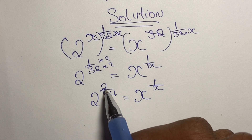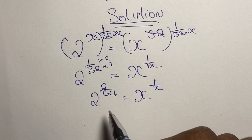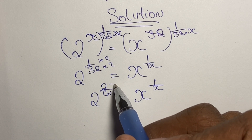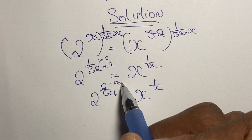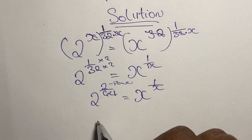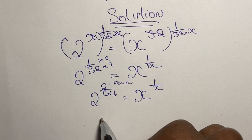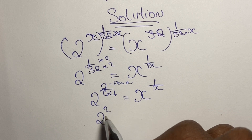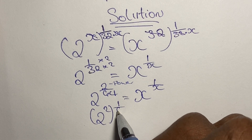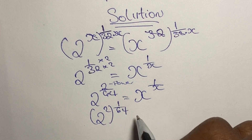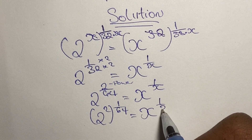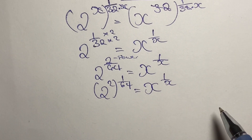From here, where we have 2 to the power of 2 over 64, the numerator 2 is our power. So we rewrite this as (2 to the power of 2) to the power of 1 over 64, which equals x to the power of 1 over x.